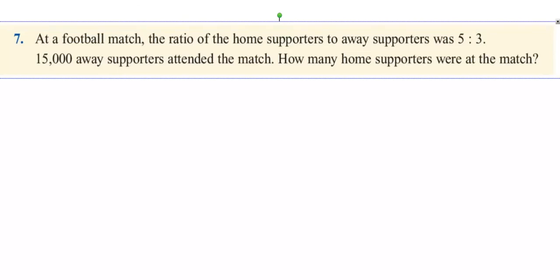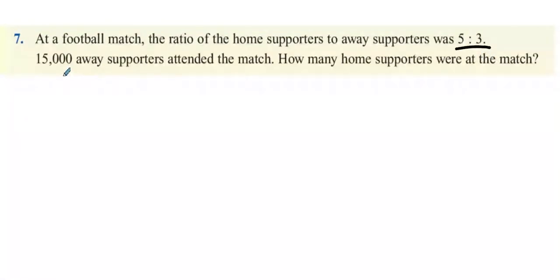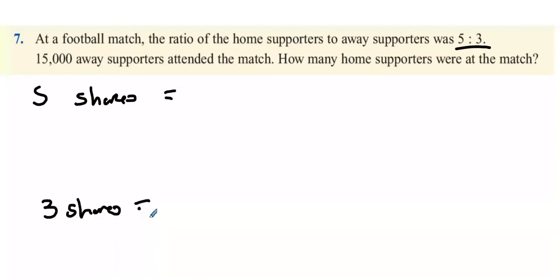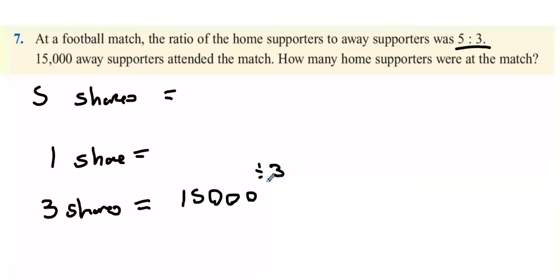Question 7. At a football match, the ratio of home supporters to away supporters was 5 to 3. 15,000 away supporters attended. How many home supporters were at the match? Five shares are home supporters. We know three shares equals 15,000, so one share is 15,000 divided by 3, which is 5,000. Multiply by five to get 25,000 home supporters.